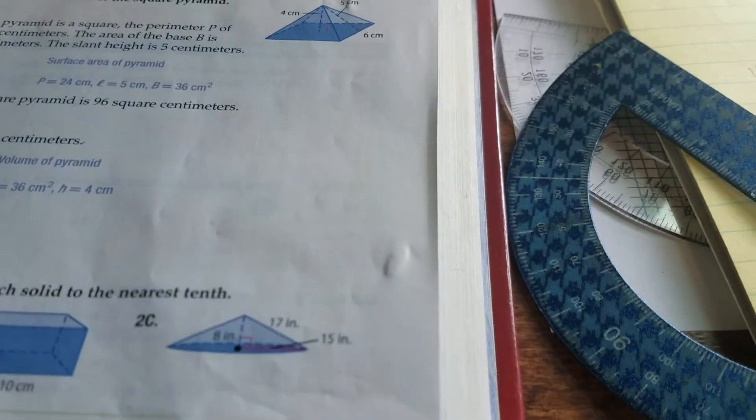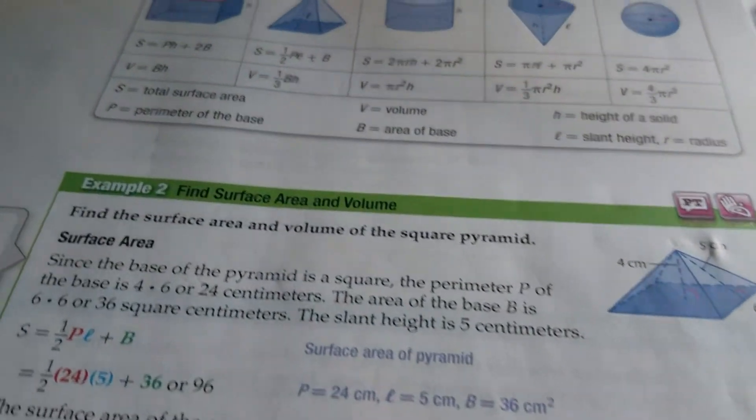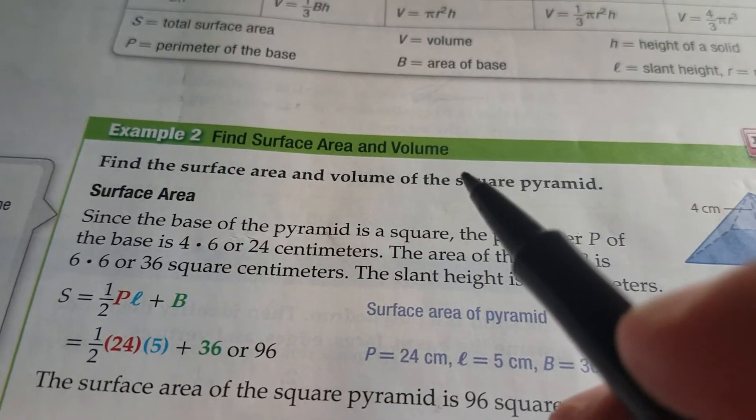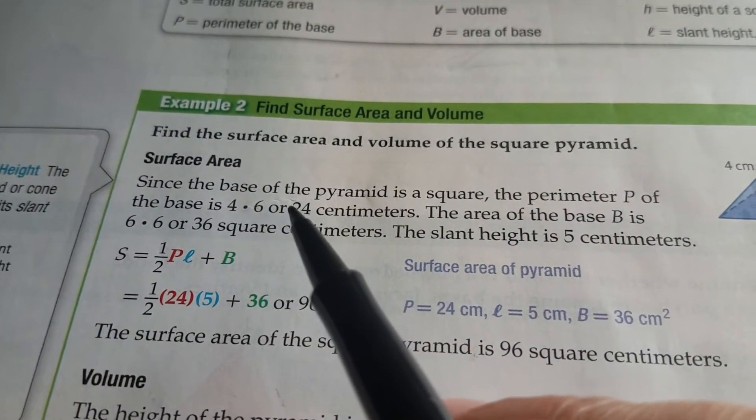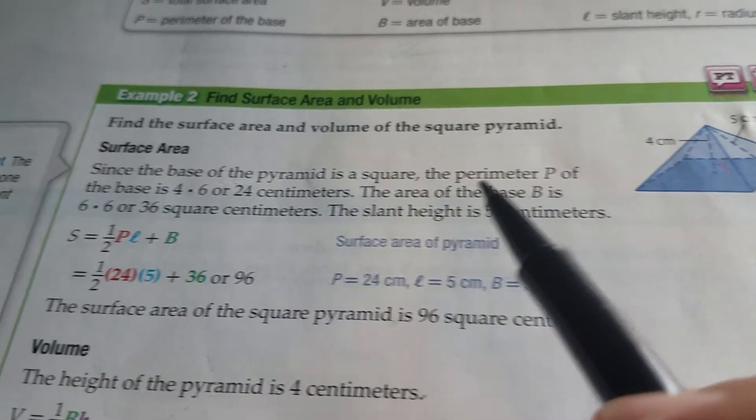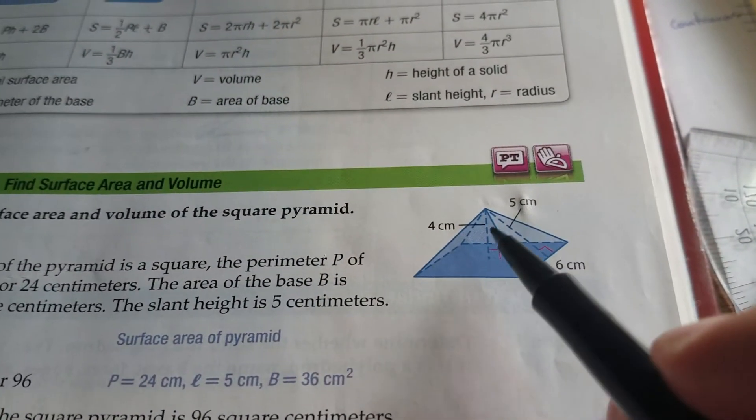Hello everyone, we're on page 69. We're going to be looking at example 2: find surface area and volume. Since the base of the pyramid is square, we need to find the perimeter. So we're going to find the surface area.